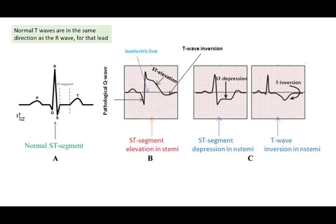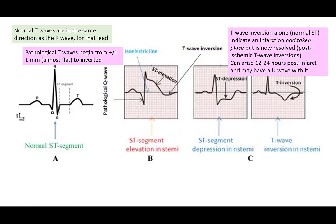I'm just going to give you a little note here. Normal T waves normally would be in the same direction of the R wave. So if you're looking at a lead where the R is positive, the T should be positive. However, pathological T waves can begin even if they're almost flat, a little bit above or a little bit low. Pathological T waves can actually begin flat and then there can be some inversion. However, T wave inversion alone, if there's a normal ST and you don't see any other problems, usually is something that's happened a day, about a day after an infarct has happened. It doesn't indicate a current infarct.